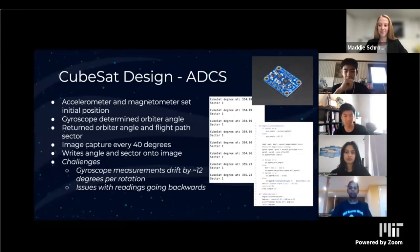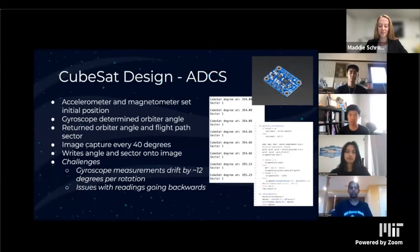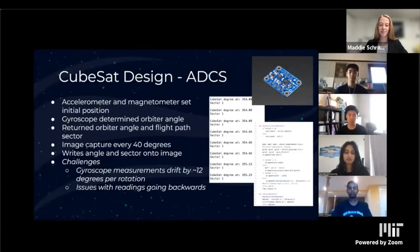This is our ADCS system — Attitude Determination and Control System. The particular unit we used has an accelerometer, magnetometer, and a gyroscope, which tell us the CubeSat's initial position and determine its orbiter angle. Our program returns the angle and the flight path's sector, and it takes a picture every 40 degrees, writing the angle and sector information directly onto the image. Some challenges in the ADCS system were that gyroscope measurements had a tendency to drift by 12 degrees per rotation, introducing error into our measurements. We also had issues with readings going backwards, most likely caused by power issues.